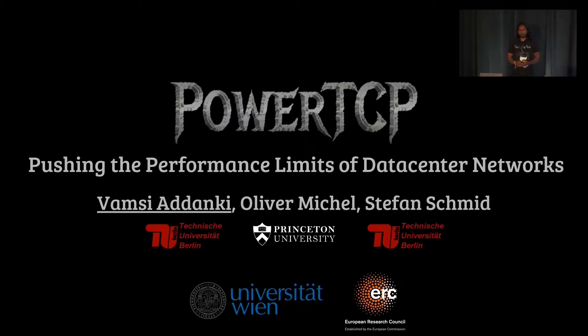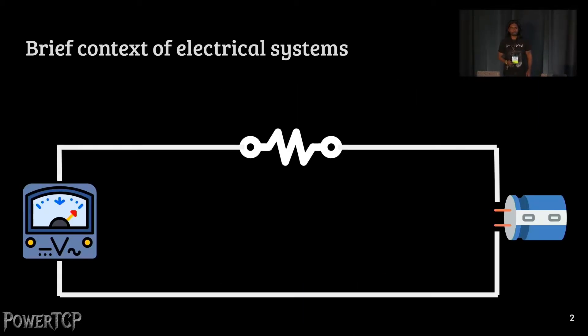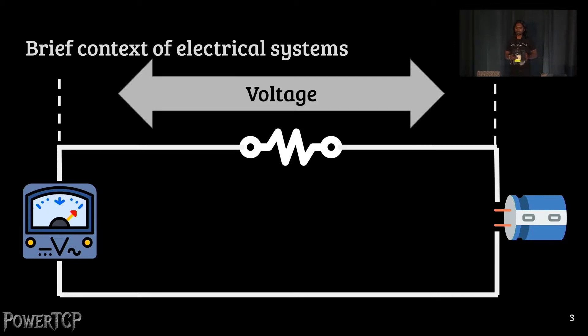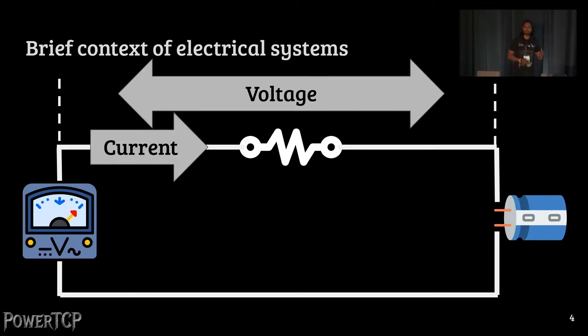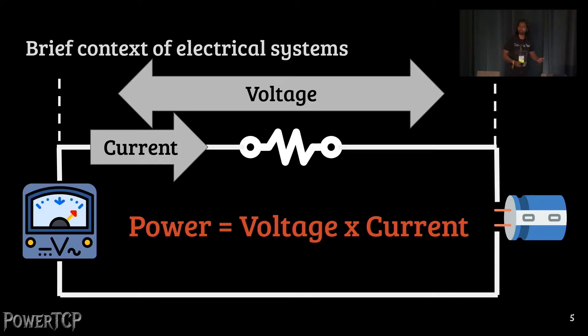So, why do we call it PowerTCP? Let me give you a brief context about electrical systems first. This is a basic RC circuit. The potential difference across two points here is called voltage. A current flows through the circuit and power is the product of voltage and current.